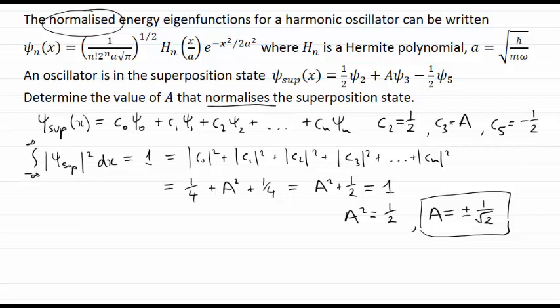Remember, these coefficients squared will tell us the probability of being in a particular energy state. The probability of being in some n eigenstate here turns out to simply be the mod squared of that coefficient in my superposition state.